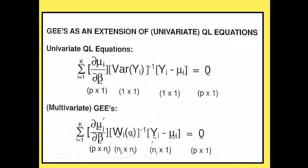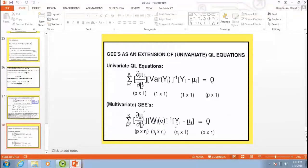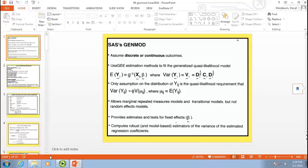In summary, GEE is a way of generalizing quasi-likelihood for correlated data — it involves solving a set of matrix equations with correlation structures. What's next is to talk about a specific program: GenMod. That's what we're now going to do.